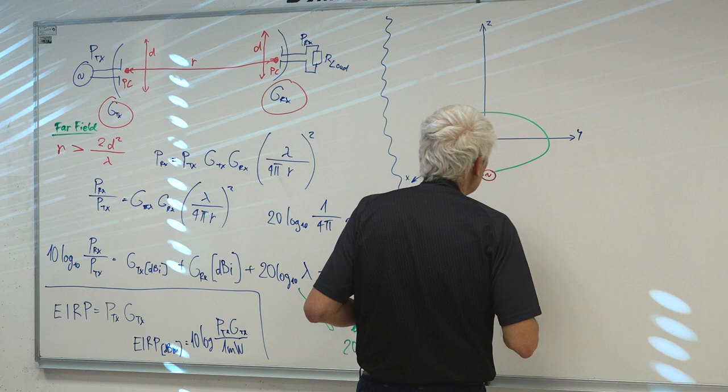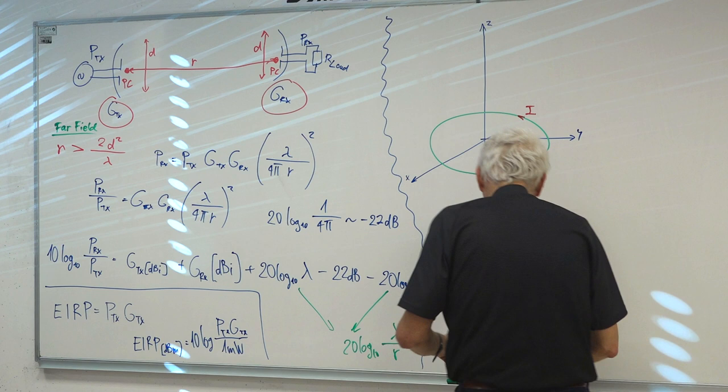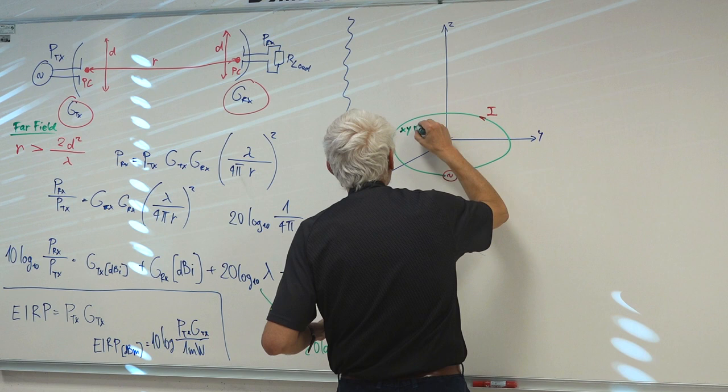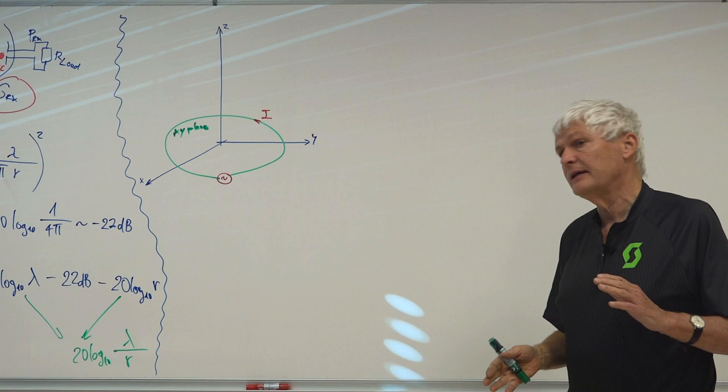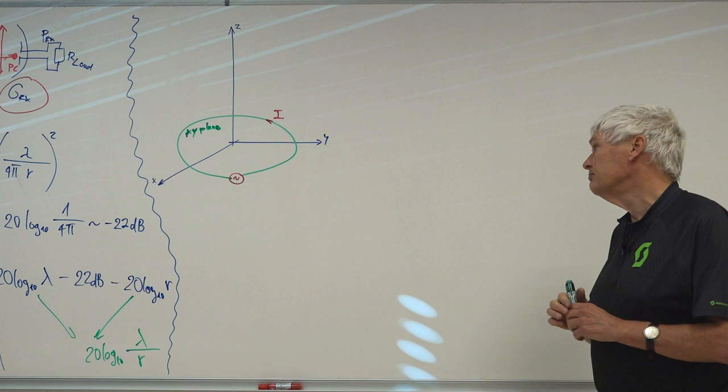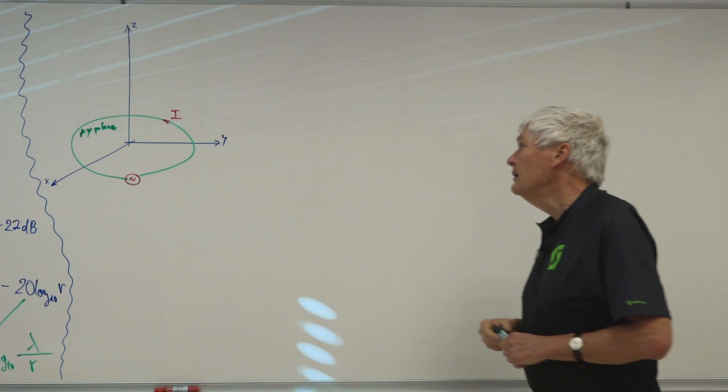A generator forces a current I in the loop, which lies in the x-y plane. This simple geometry is used today; next time we will reorient this loop for various purposes, which will make things a little more difficult. But I have to deal with this loop today because we will use it next time.